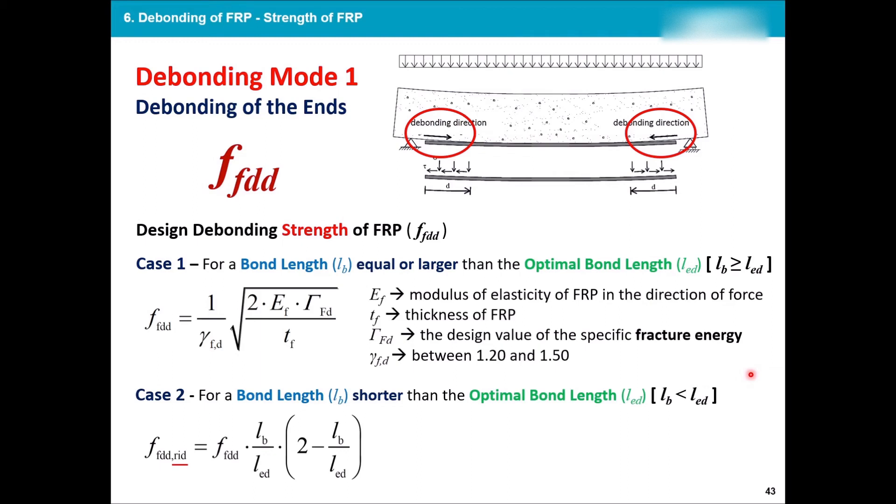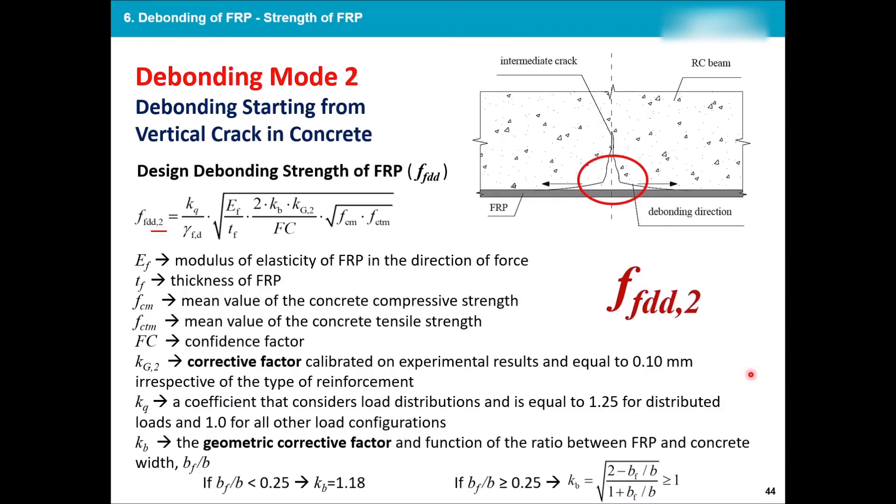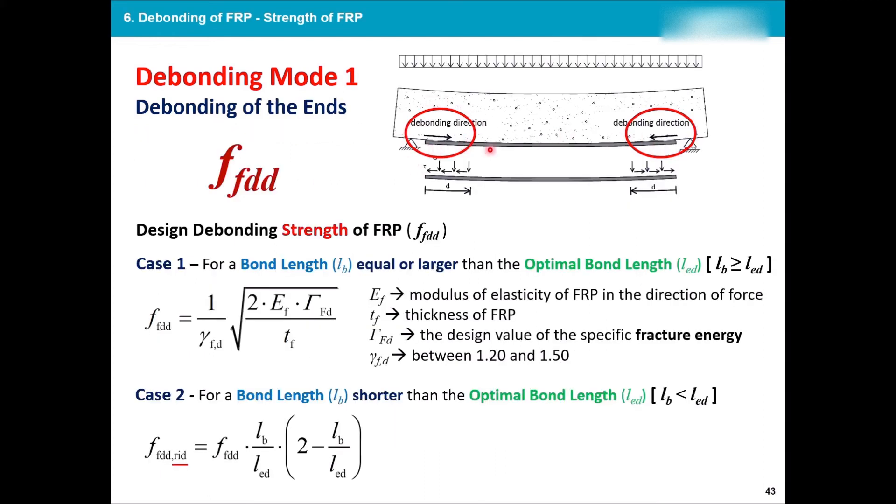Okay, this debonding, as we mentioned, can happen at different parts of the FRP. The most common ones were at the ends and in the middle. So the debonding modes will go to Mode 1, which debonding happens at the ends, and Mode 2, which the debonding starts from the vertical cracks in the concrete here. So this is, let's say, at any point of my member, and due to these cracks, you see the debonding between FRP and the member is happening. Another case was that this is the FRP, for example, in my beam, and the debonding is happening at its end.